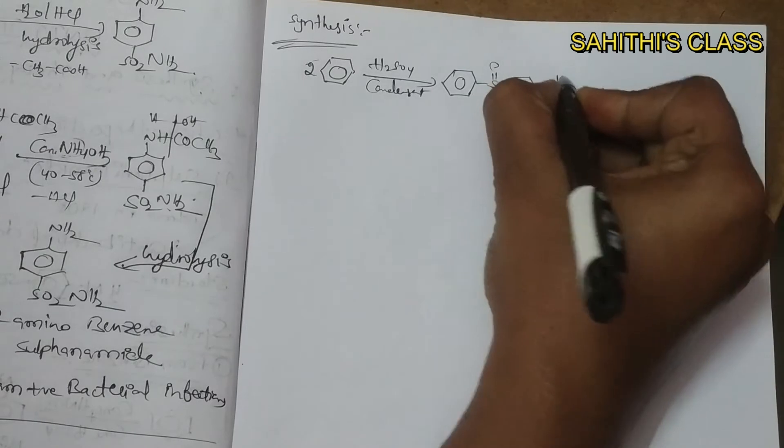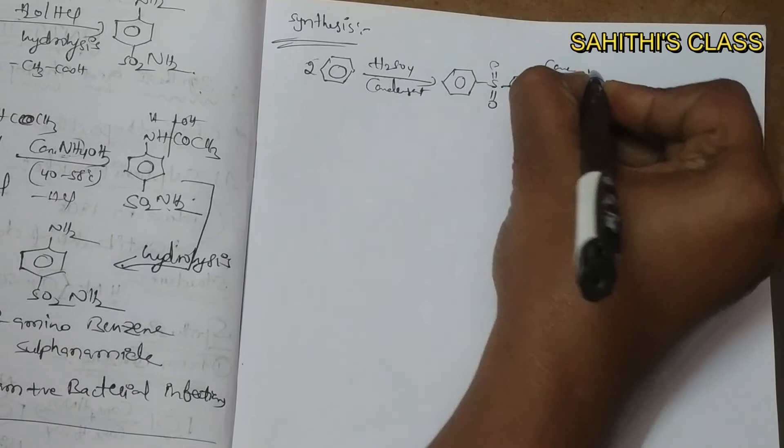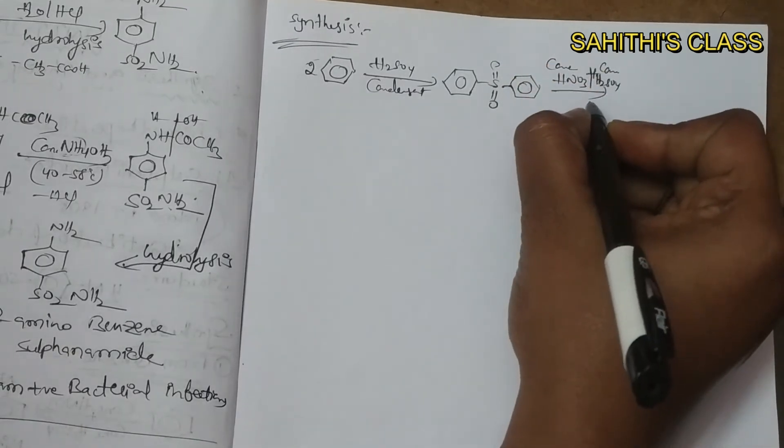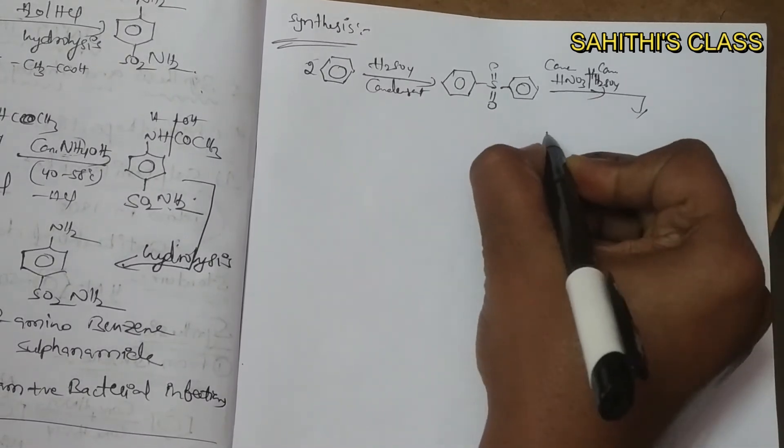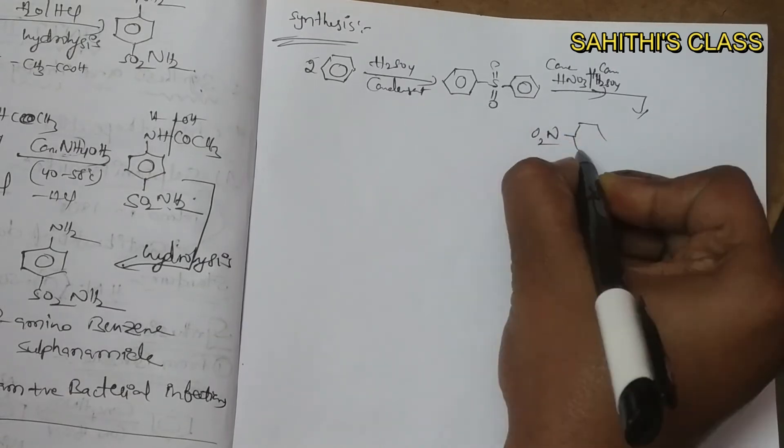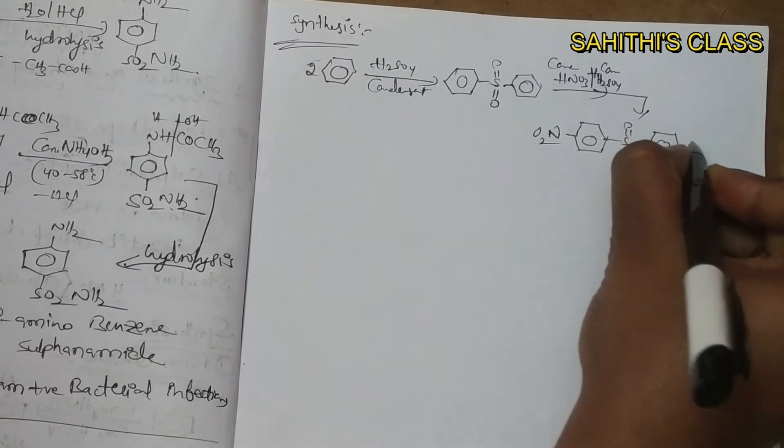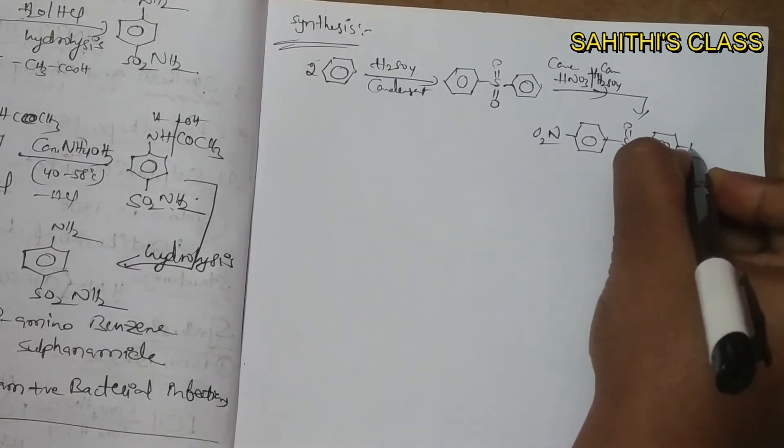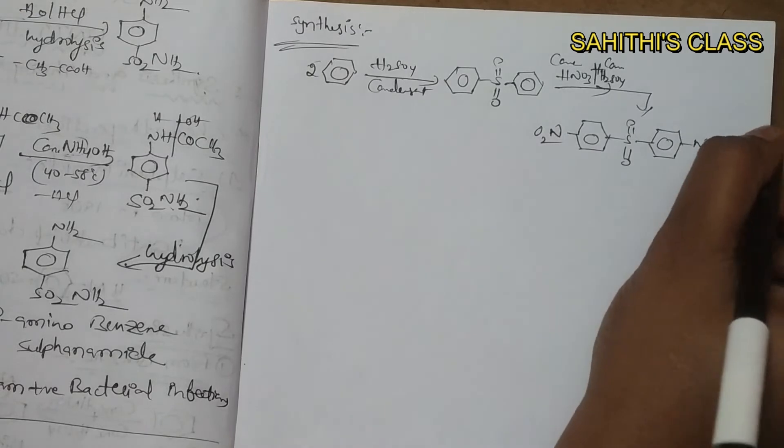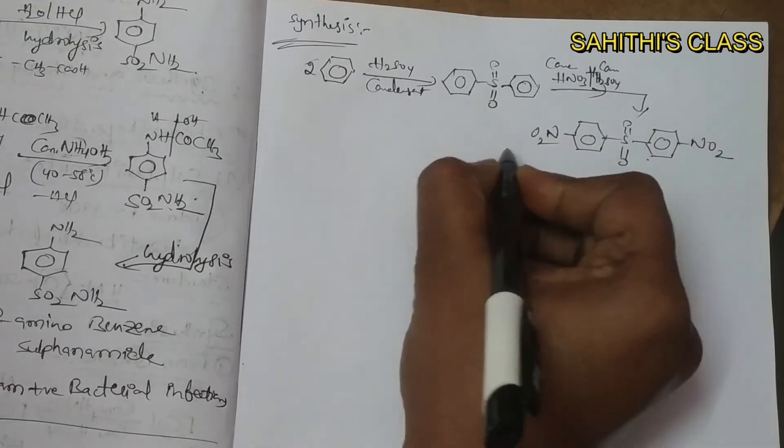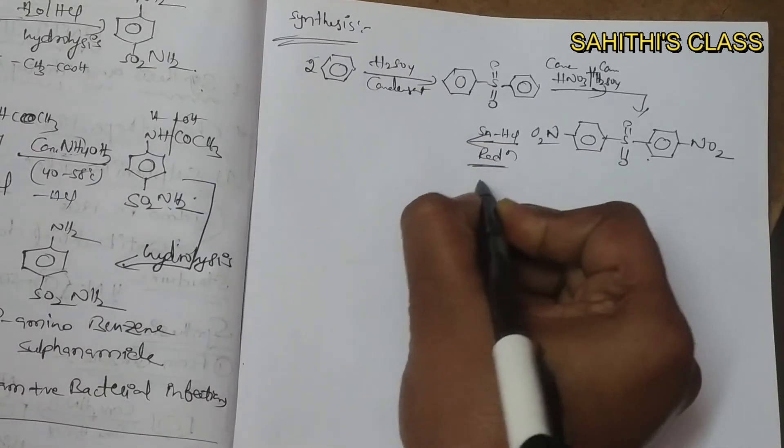It undergoes nitration. Nitration mixture is concentrated H2SO4 plus concentrated HNO3. Nitration gives the nitro group in the para position. So see here, this is 4,4-dinitro diphenyl sulfone.